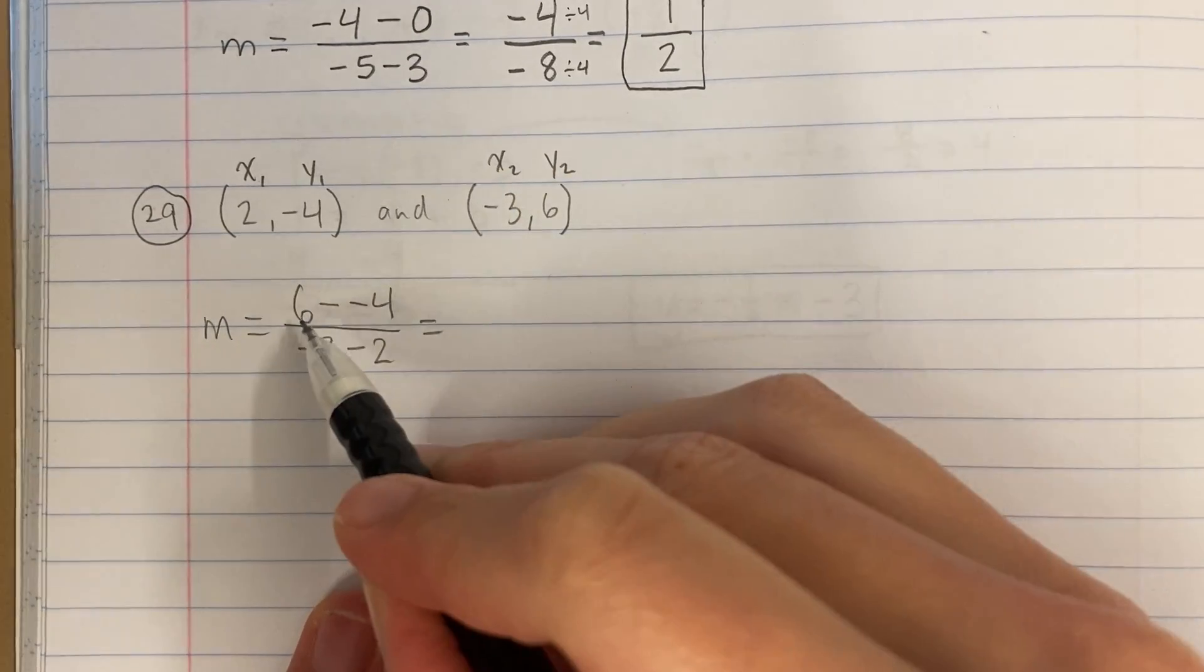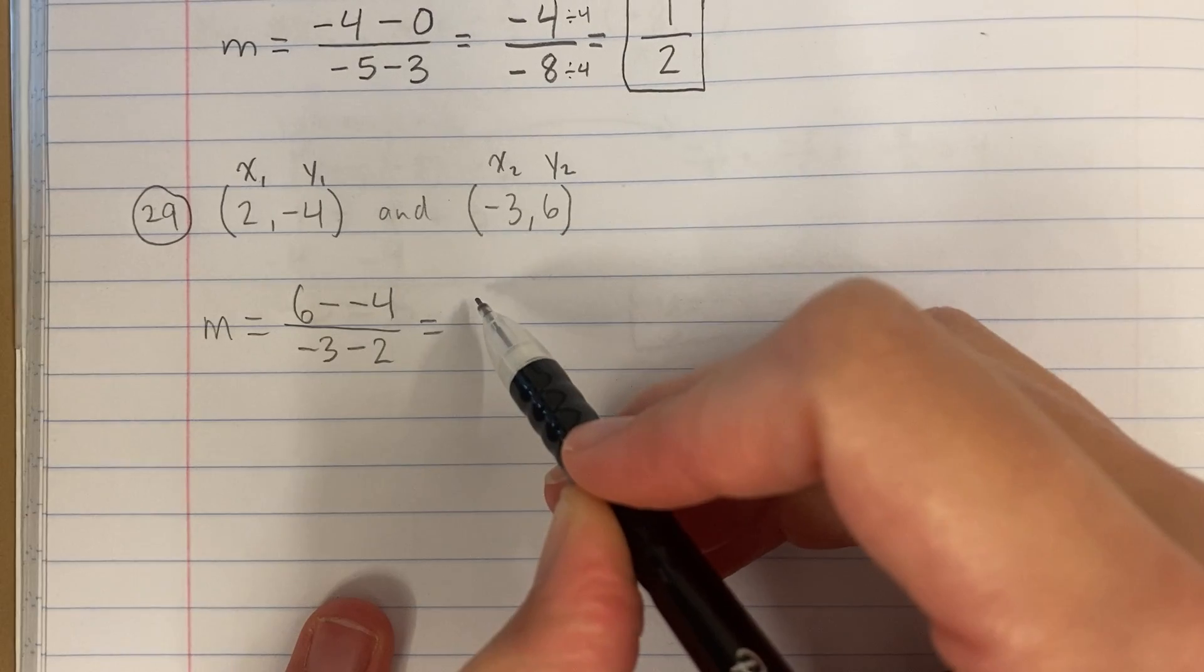Now I'm going to do the math. This becomes a plus sign, so this becomes 6 plus 4, that's 10.